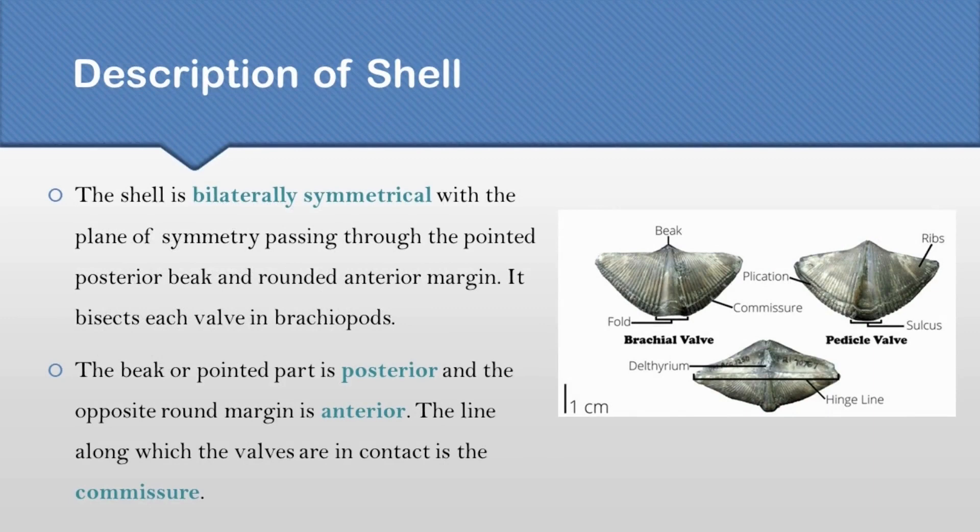Description of shell. The shell is bilaterally symmetrical with the plane of symmetry which bisects each valve in Brachiopods. The beak is the posterior part and the Umbo, which is the rounded margin, is the anterior part, and the valves are in contact along a line named commissure.